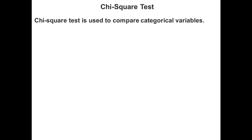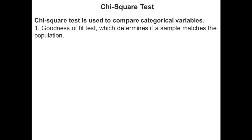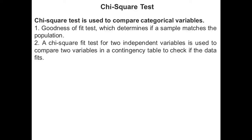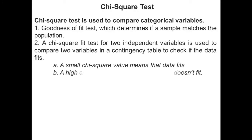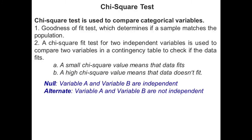Chi-square test is used to compare categorical variables. There are two types of chi-square test. First, goodness of fit test, which determines if a sample matches the population. Second, a chi-square test for two independent variables, which is used to compare two variables in a contingency table to check if the data fits — a small chi-square value means the data fits, and a high chi-square value means the data doesn't fit. In a chi-square test, the null hypothesis is that variable A and variable B are independent, whereas the alternate hypothesis is that variable A and variable B are not independent.